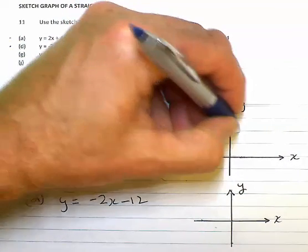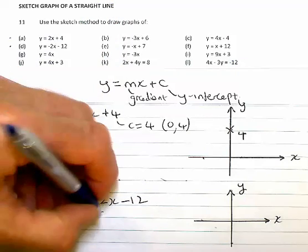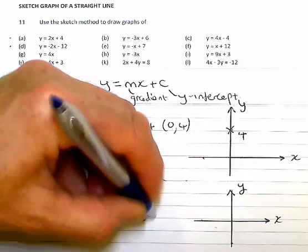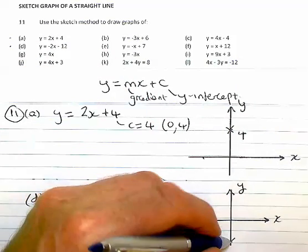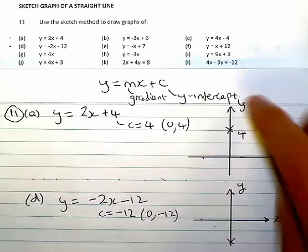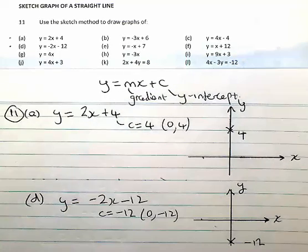And in the second instance, (0,-12). Now I've only done little sketch graphs here, but you can just see how I've been able to label them off quite readily.